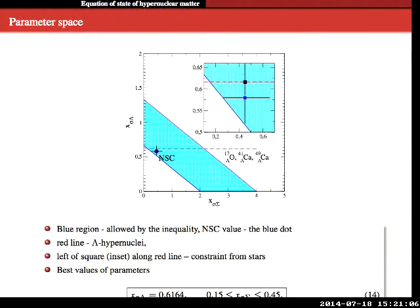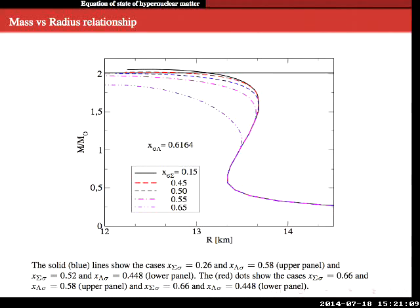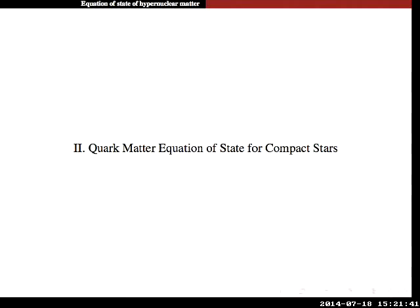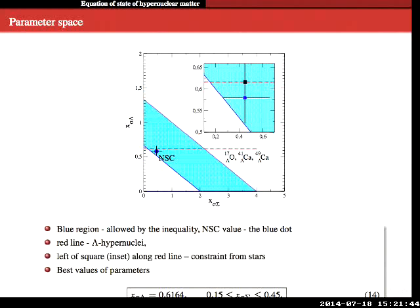So if you go back to the previous slide, you vary the value of X_sigma-sigma. Sigma lambda is specific value that comes from hypernuclei, optimally fitted to hypernuclei. And then I vary sigma sigma. Neutron star observation is really pushing you to the lower limit of X_sigma-sigma, right? Yes. So basically, it's along this line, this small parameter. So the parameter space is quite constrained for this particular density functional.